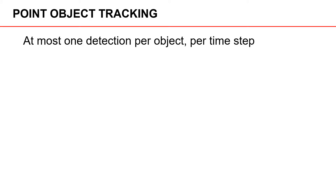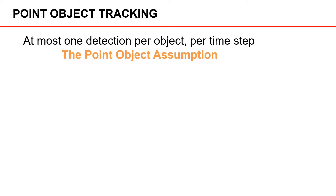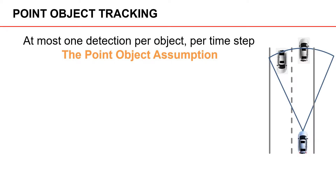The first type of tracking is called point object tracking. For this type, we have at most one detection per object per time step. At most one means that we either get no detection or a single detection, and in object tracking literature this is often called the point object assumption. We can have a look at a simple illustration: we have an autonomous vehicle with a forward-facing sensor, with a field of view illustrated by the circular segment.